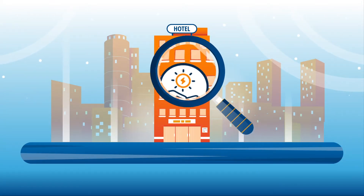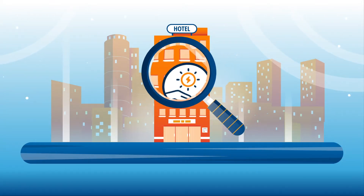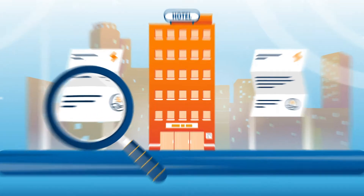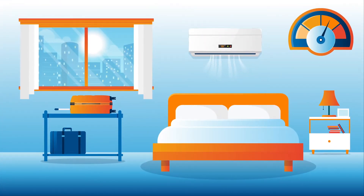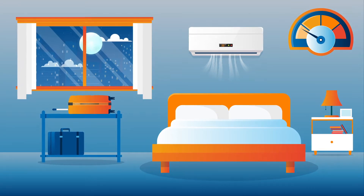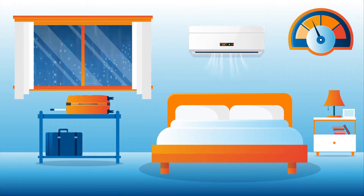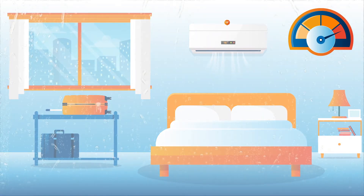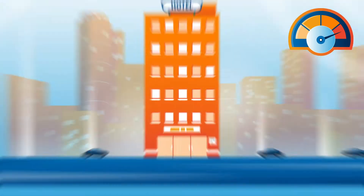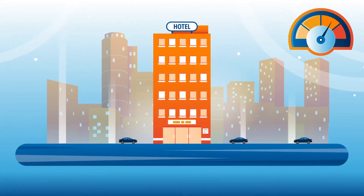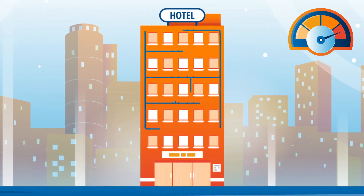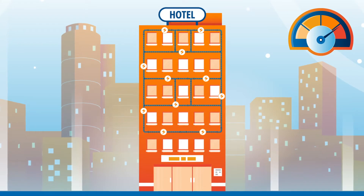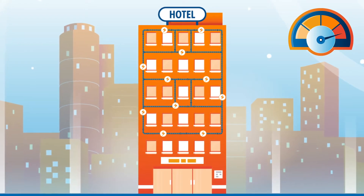Calculating energy savings from your hotel's guest room HVAC system is not as easy as comparing monthly electricity bills. Many factors affect the energy consumption of an HVAC system in a guest room, such as weather conditions, external temperatures, humidity levels, guests' AC preferences, and occupancy levels. All of these factors can increase the HVAC system's need to cool or heat a guest room, resulting in higher energy consumption.